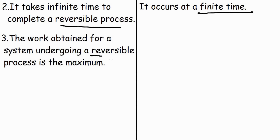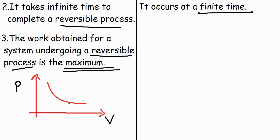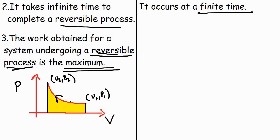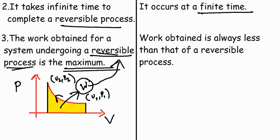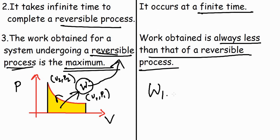The third point: the work obtained for a system undergoing a reversible process is the maximum. On the PV diagram, the work for a reversible process can be calculated by integrating the curve from V1P1 to V2P2 — that is, the shaded area under the curve represents the work for the reversible process. For an irreversible process, the work obtained is always less than that of the reversible process, and we cannot use the integral of P dV to calculate it.